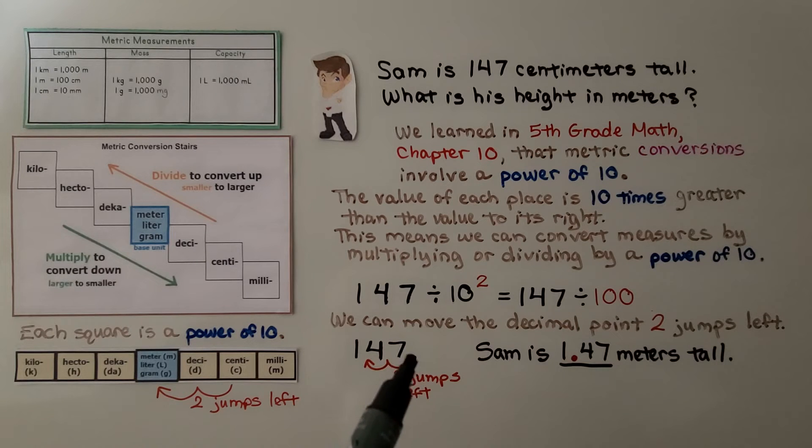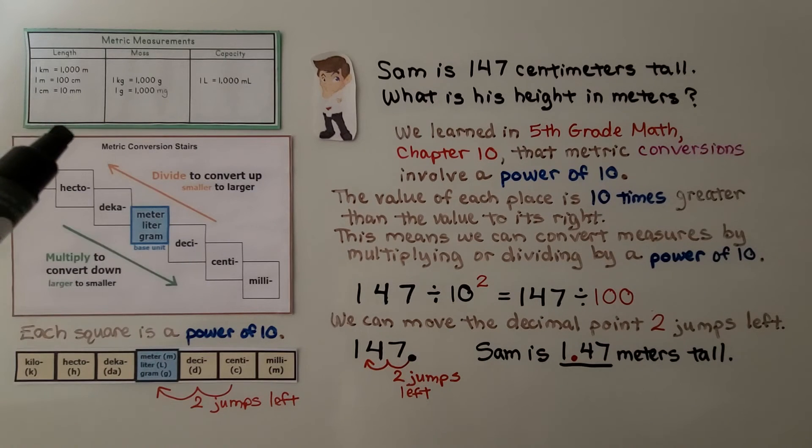For 147, the decimal is back here. We're going to go 2 jumps left. 1, 2. When we divide, we're going in that direction to the left. We know that Sam is 1.47 meters tall. Now, if you don't remember that lesson or you need a review, it's going to be linked in this description.